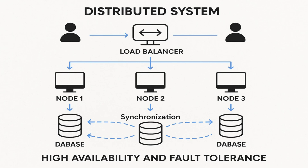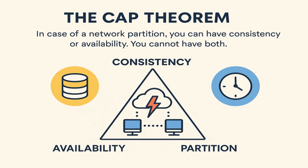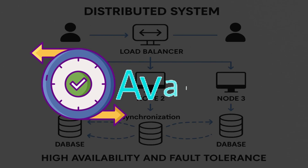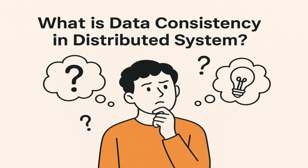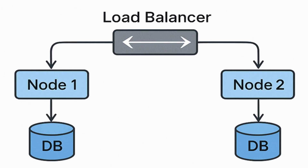We have already learned in our CAP theorem video that for a distributed system, when there is a network partition, we can either have consistency or availability. By storing the data at multiple servers, we have achieved availability, because if one node is down, the user will be served with the other node's data. Now, let's understand what data consistency means in distributed systems. It is possible that one user is reading the data while another user might be updating it, and both users are likely connected to different nodes.